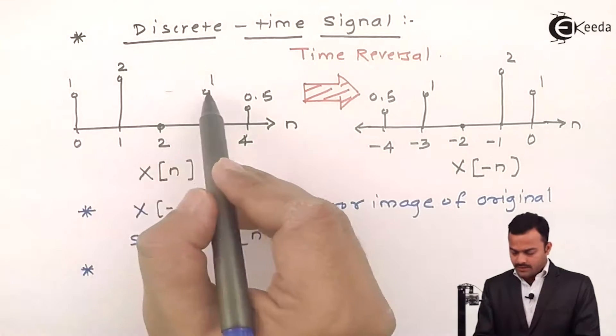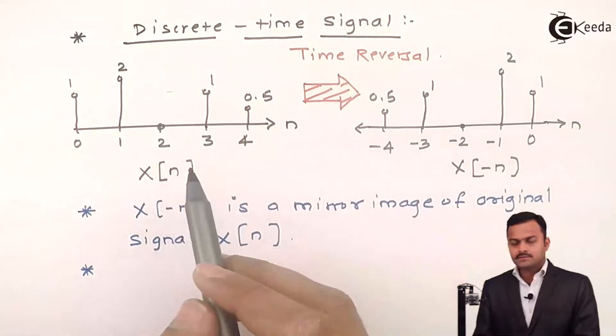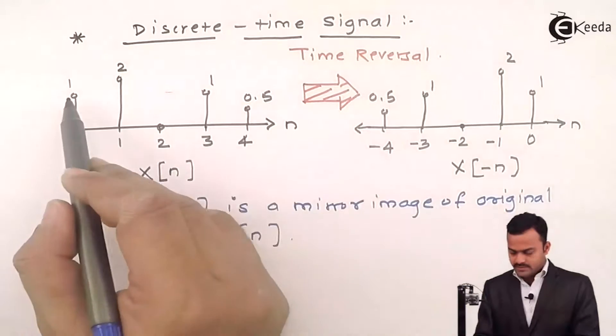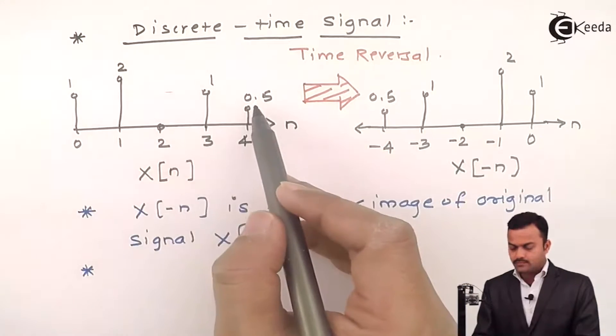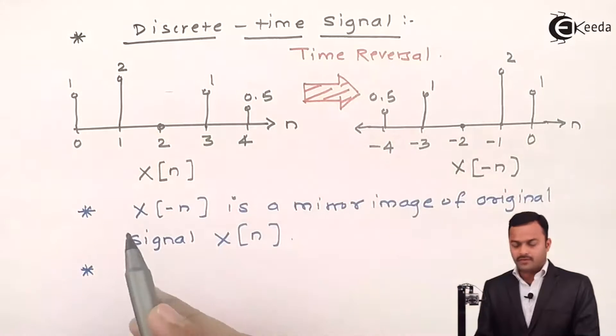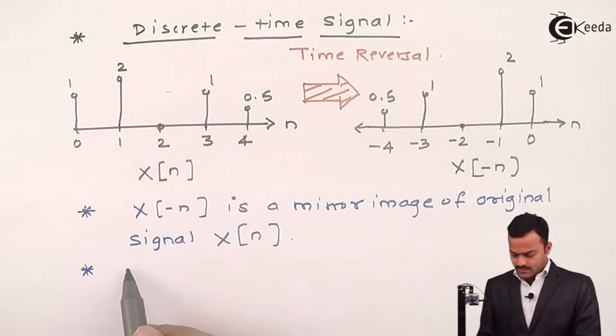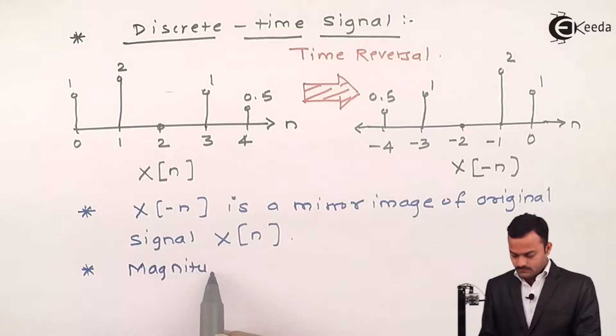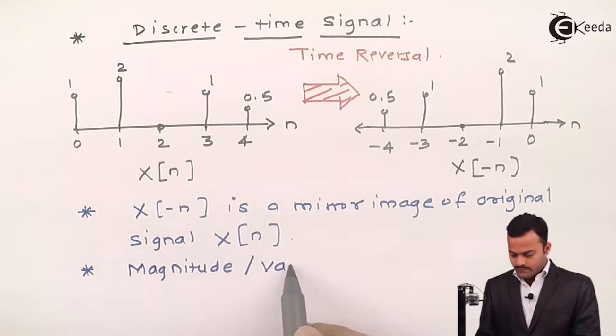All the dependent variables will remain intact so here all the values will be same meaning 1, 2, 1, 0.5, or here also 1, 2, 1, 0.5. So I can say magnitude or you can say value of a signal X of n and X of minus n is same.